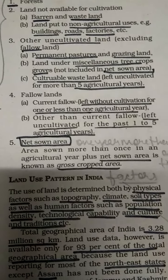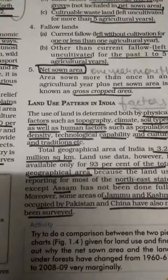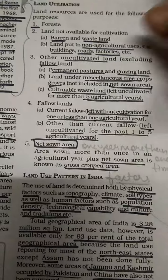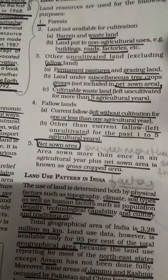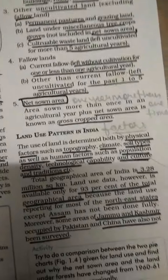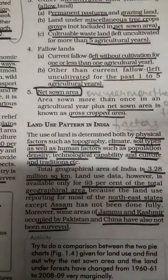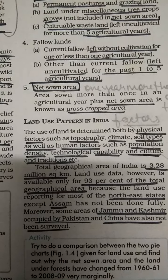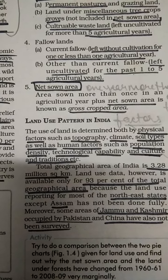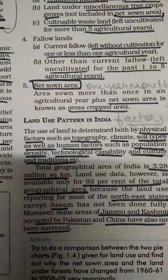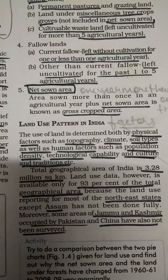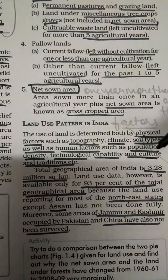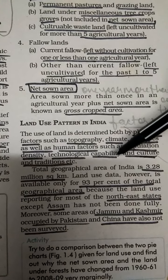Net sown area (NSA) is land where more than one crop is grown in an agricultural year. The crops grown on that land are known as the gross cropped area. Net sown area is also abbreviated as NSA — remember this term as it will be used further.